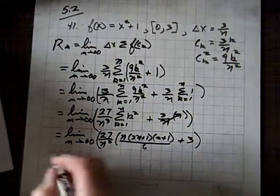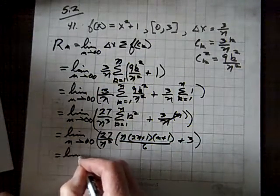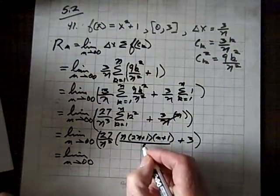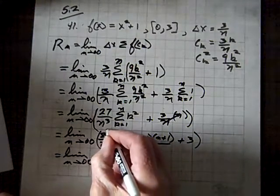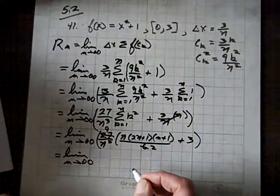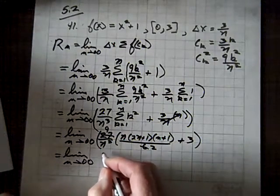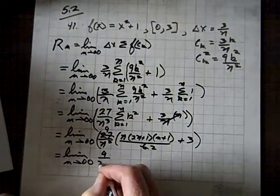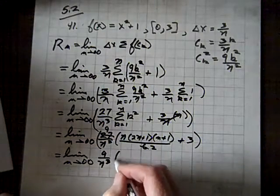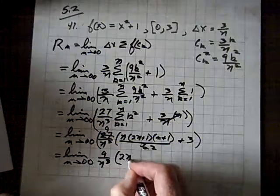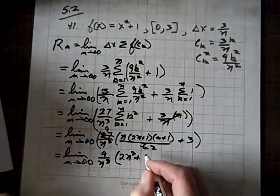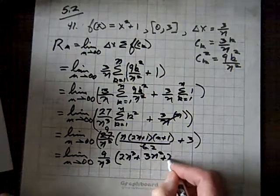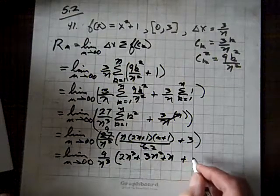So, that equals the limit as n goes to infinity of, and 3 goes into 6 twice and into 27 9 times. So, we've taken care of that. And also, when we multiply this thing out, we've got a 9 over n cubed, and that's going to be times 2n cubed plus 3n squared plus n plus, and there's our friend Mr. 3 there.